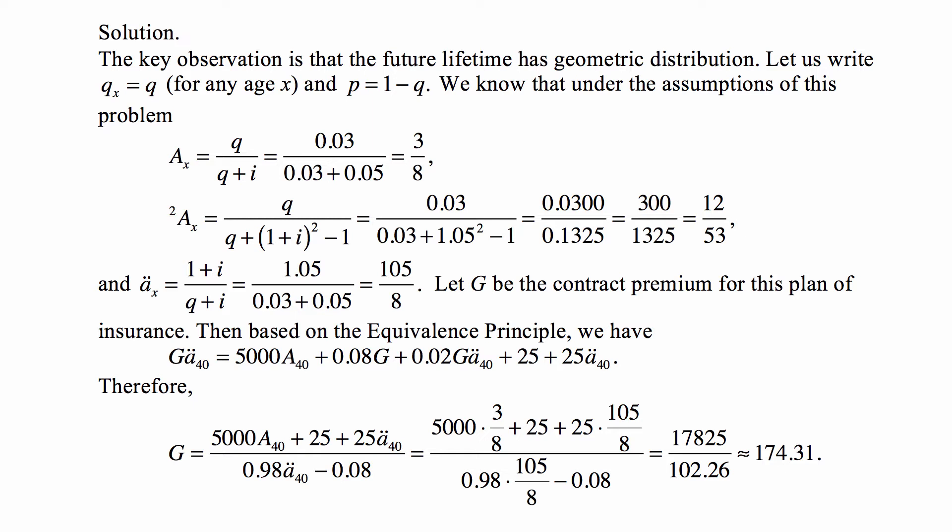ax is q/(q+i), so in this case 0.03/(0.03 + 0.05) = 3/8.